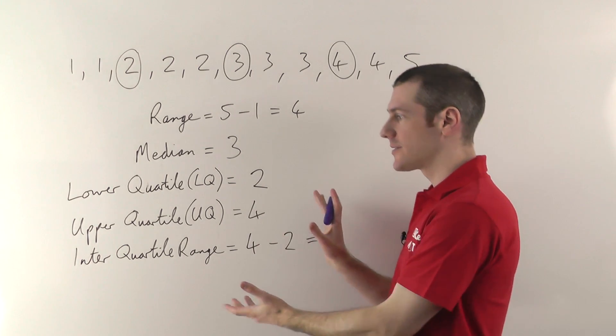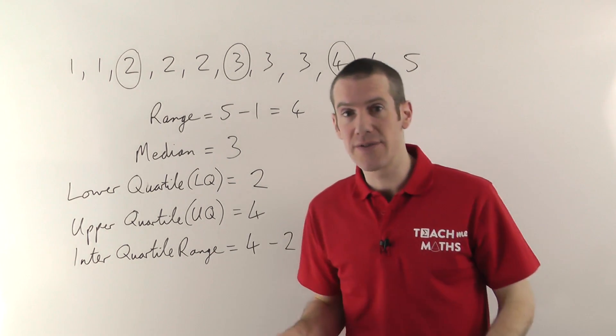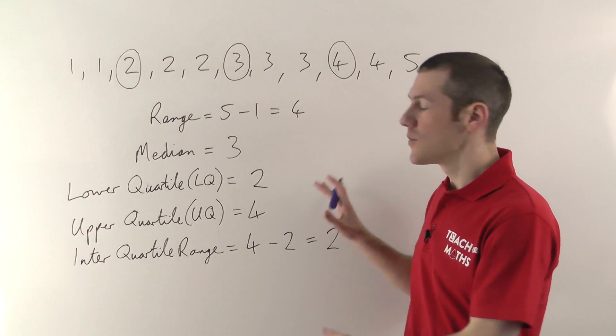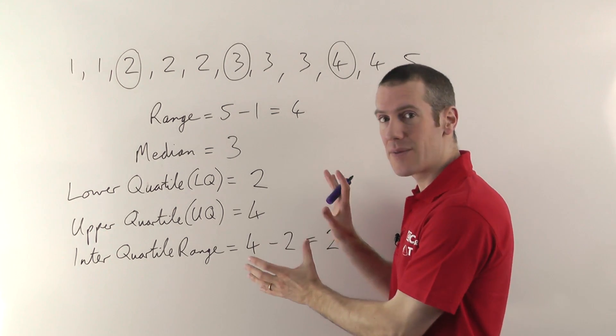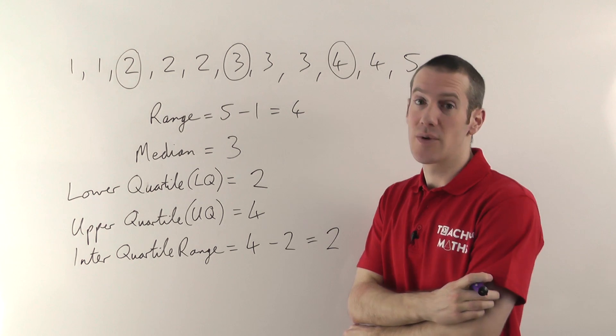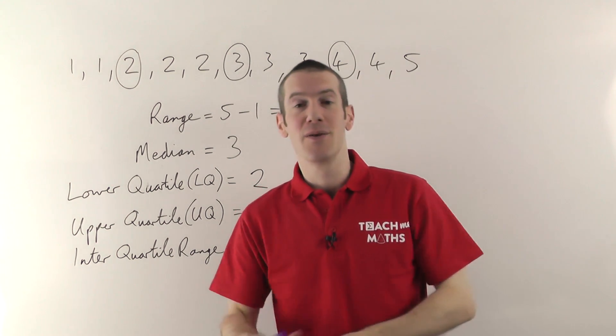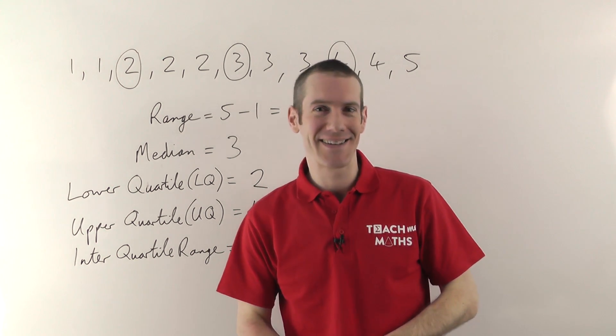So those are the quartiles. These can get a little more difficult when dealing with large lists of numbers, but the concepts don't change. Just like mean, median, mode, if you can get your head around the concepts here, you'll find it's a lot easier when dealing with a larger list of numbers. My name is Jonathan Hicks and you're watching Teach Me Maths.